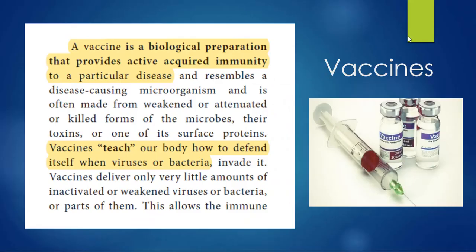Next we look at vaccines. We are currently trying to find vaccines for COVID-19, the coronavirus. Vaccines are very important biological preparations that provide acquired immunity to a particular person for a particular disease — biological extracts which destroy particular antigens or work against particular types of diseases.